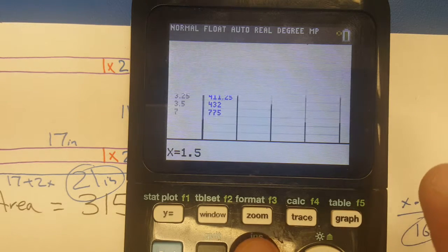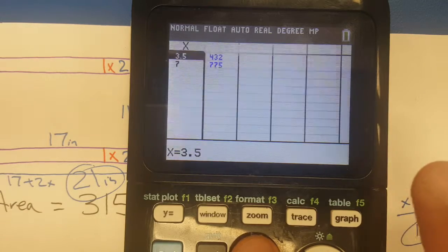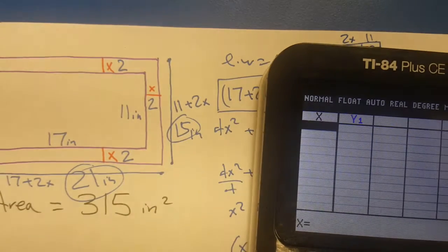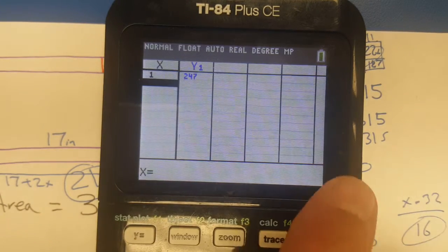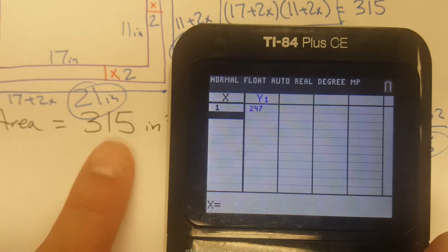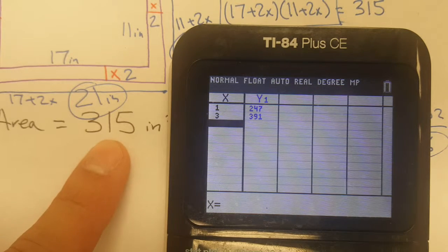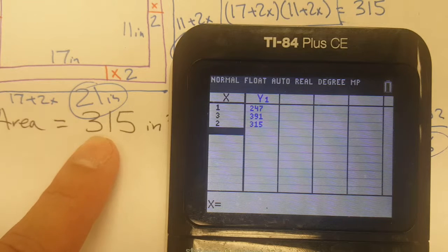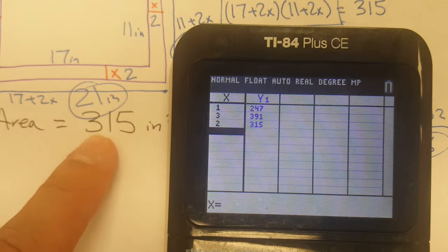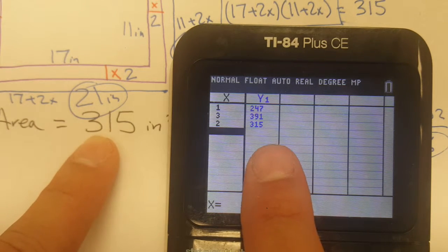I have the table filled out from an earlier problem, so let me get rid of all this stuff. Now you just start to guess and check. If I want a one inch frame, what does it need to be? 247. I want to hit 315. Let's try three inches. That's too much. Let's try right in the middle. Boom, got it, two inches.